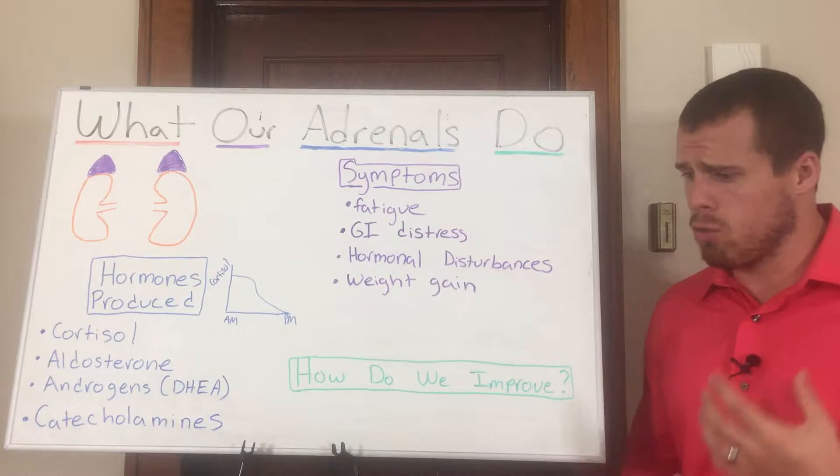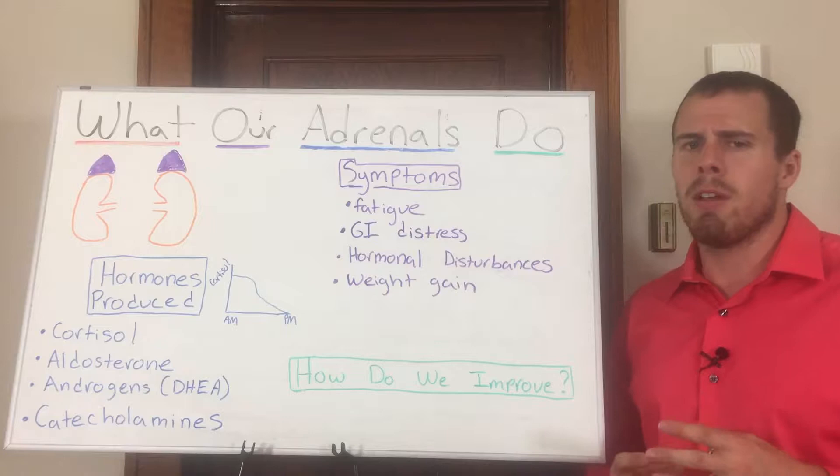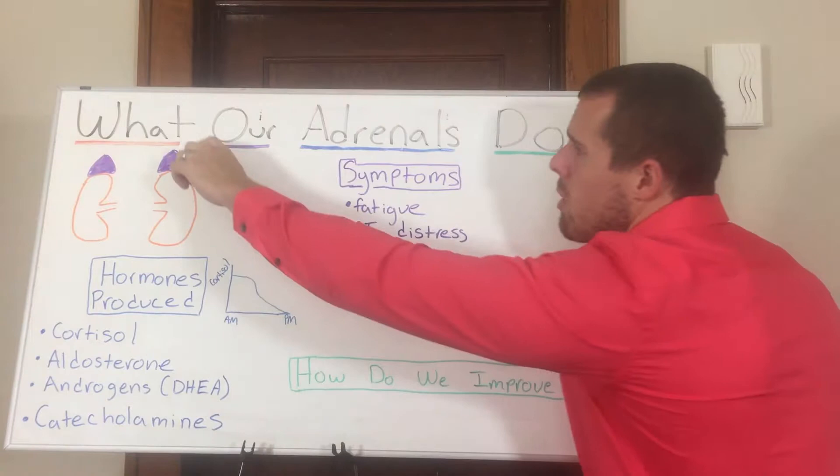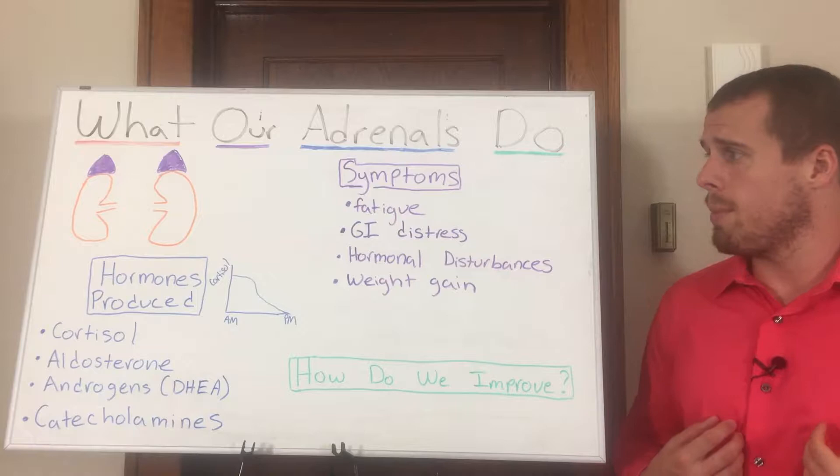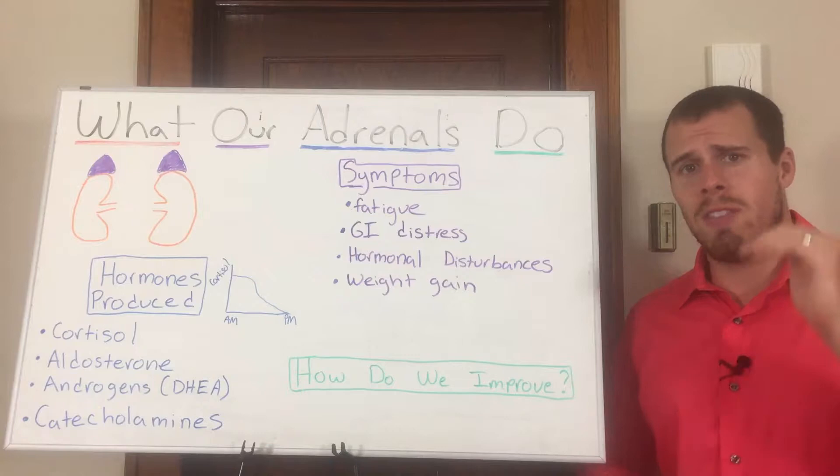When we're talking about adrenal glands, these are really, really important. I think people kind of just forget to look at them and forget the impact that they have. Our adrenal glands are these small little glands that sit on top of the kidneys. This is supposed to be the kidneys, and those are our adrenals right on top of them.